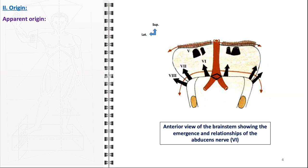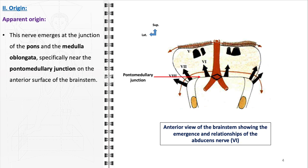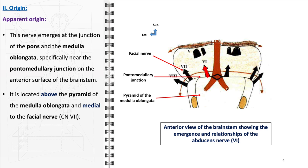The abducens nerve has an apparent origin with precise neuroanatomical landmarks. It emerges at a well-defined region, the junction of the pons and the medulla oblongata, particularly near the pontomedullary junction on the anterior aspect of the brainstem. This location is anatomically significant, positioned above the pyramid of the medulla oblongata, which is a prominence on the anterior surface of the medulla. The nerve's emergence medial to the facial nerve is another crucial relationship that provides a reference for locating the abducens nerve during neurosurgical procedures or radiological assessments.